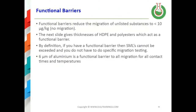Functional barriers reduce migration of a substance to less than 10 micrograms per kg. At that level you can have unlisted substances present outside the functional barrier without needing them listed, and for listed substances on the non-food contact side of the barrier you do not have to test for them. By definition, if you have a functional barrier, specific migration limits cannot be exceeded and you do not have to perform specific migration testing.